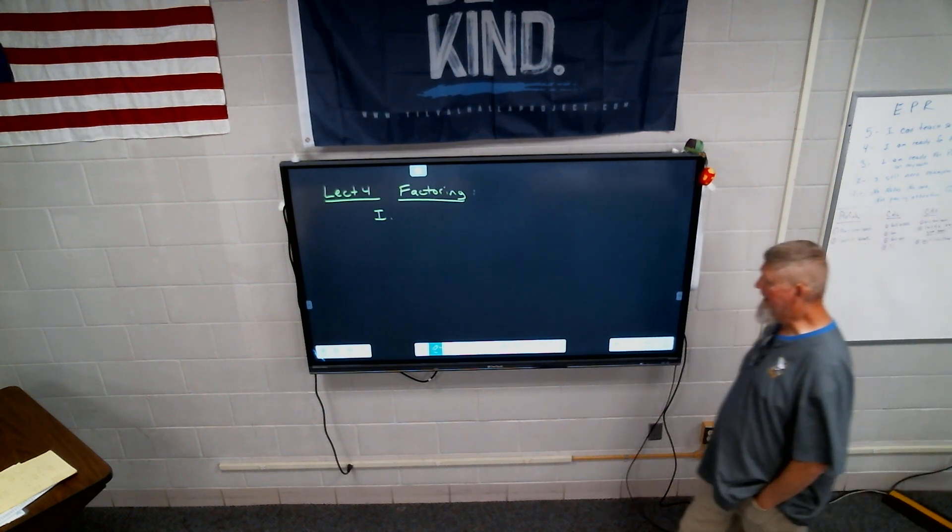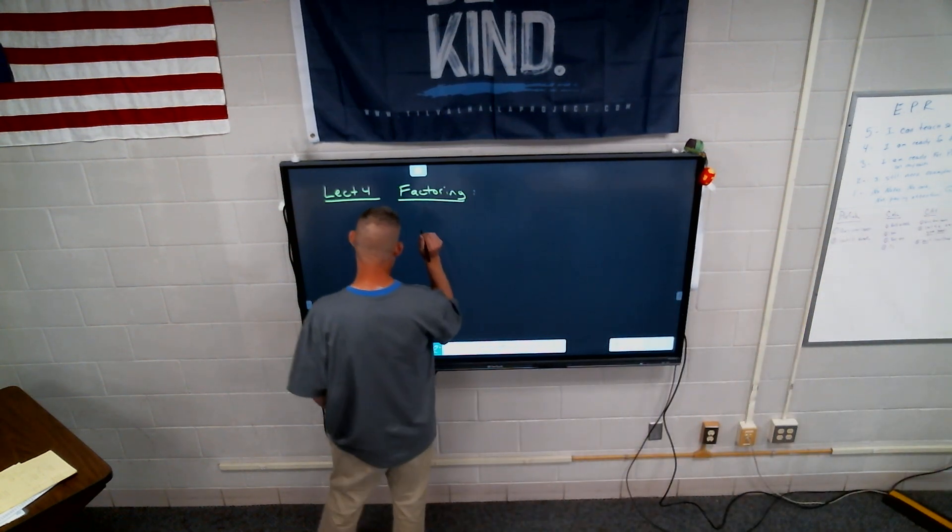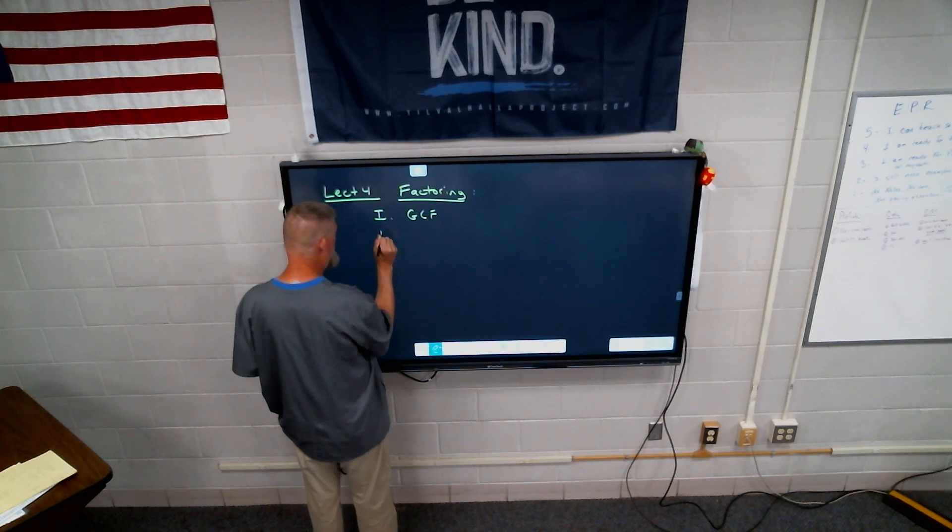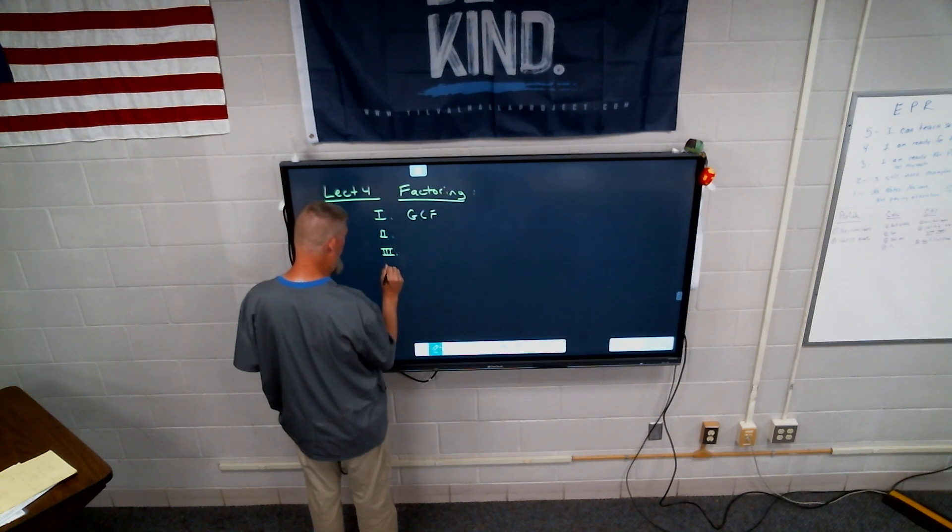So, number one is always the greatest common factor. Always, always, always. We always find the greatest common factor. Now, the rest of these, two, three, which we're going to finish today, and four, aren't really steps.